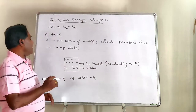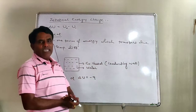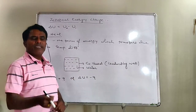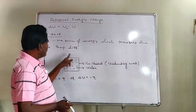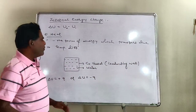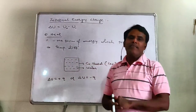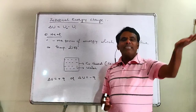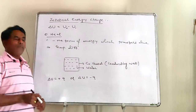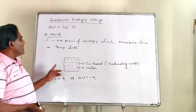Suppose we have taken a system in the form of water, placed in a vessel made of conducting material — for example, a copper vessel, since copper is a good conductor of heat and electricity. This is a conducting boundary. If this copper vessel containing water is placed in a reservoir or surroundings where the temperature is higher than the temperature of water, then heat will transfer from the surroundings into the water.